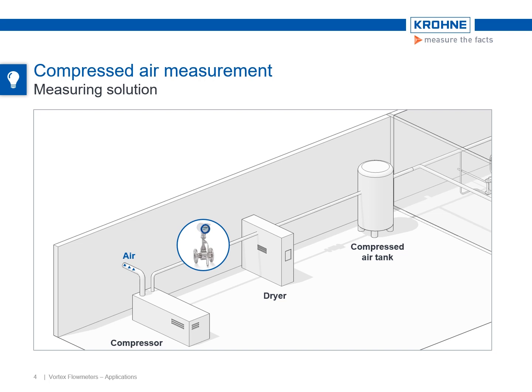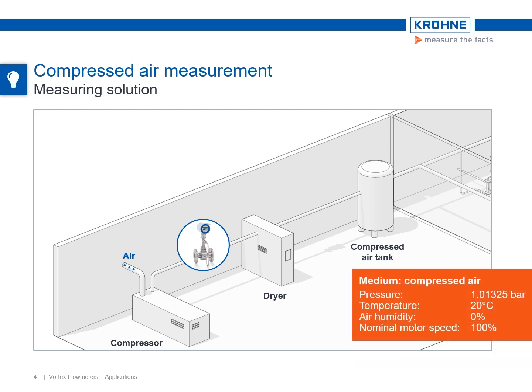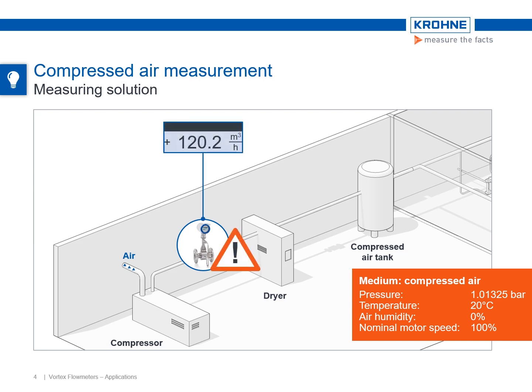The FAD functionality of the vortex flow meter calculates the air delivery under these real operating conditions at the outlet side to standardized conditions. If the FAD value falls, this indicates a lack of energy efficiency of the compressor, which can be caused, for example, by an incorrect oil or air filter.